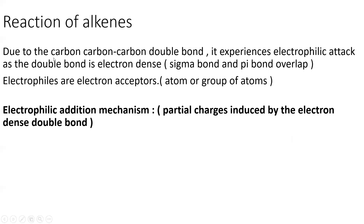Reactions of alkenes: due to the carbon-carbon double bond, they experience electrophilic attack. The double bond is electron-dense due to the overlap of the sigma and pi bonds, providing a region of high electron density. Electrophiles are electron acceptors — atoms or groups of atoms that accept electrons and are attracted to electron-dense regions. They'll be attracted to the C=C double bond and attack it, and the mechanism is called electrophilic addition.